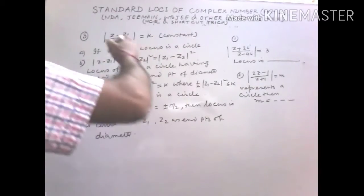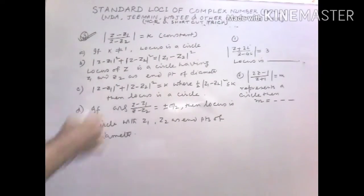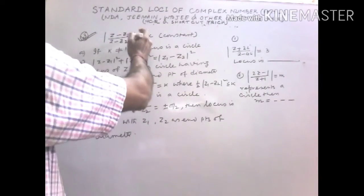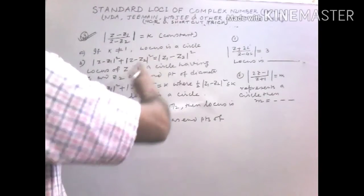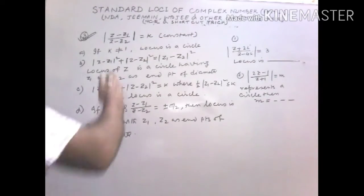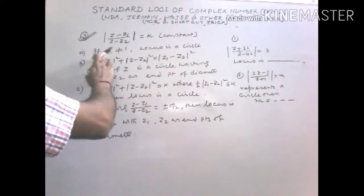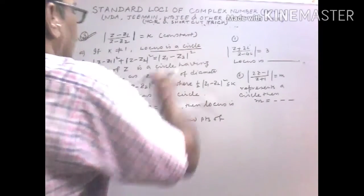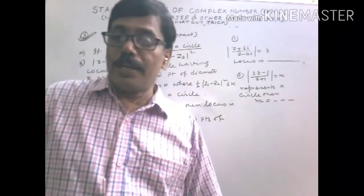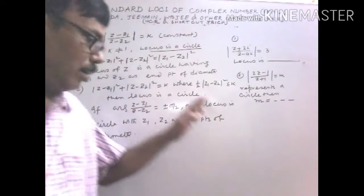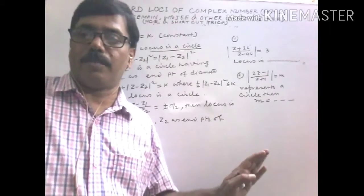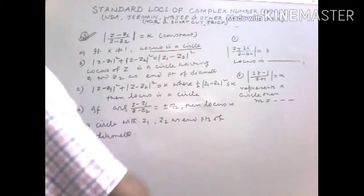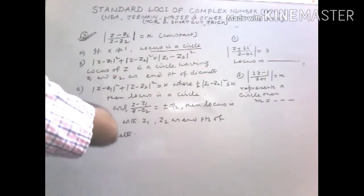Standard result 3: if |Z - Z1| / |Z - Z2| = K, where K is a constant and K is not equal to 1, then the locus is a circle. When K equals 1, we get a different case which will be discussed in result 4.